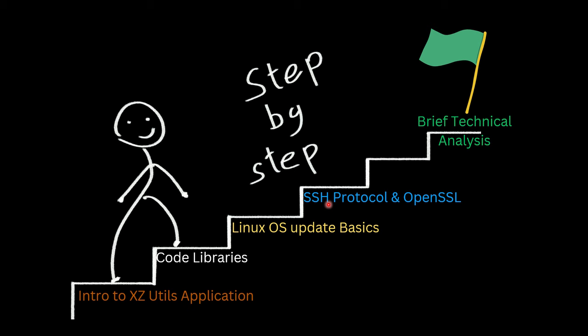Finally, in the fundamentals section, we'll discuss the SSH protocol and OpenSSL. We cover these because the backdoor introduced in XZ Utils goes on to compromise the SSH protocol and OpenSSL functions. After covering all these fundamentals, we'll do a basic technical analysis of the CVE to see how it is affecting systems.